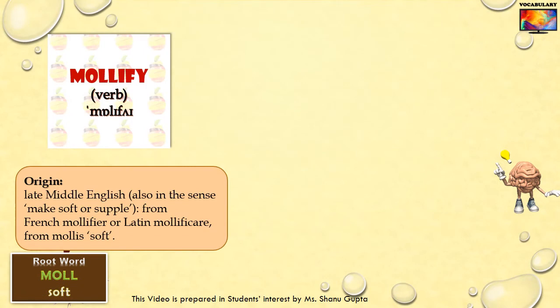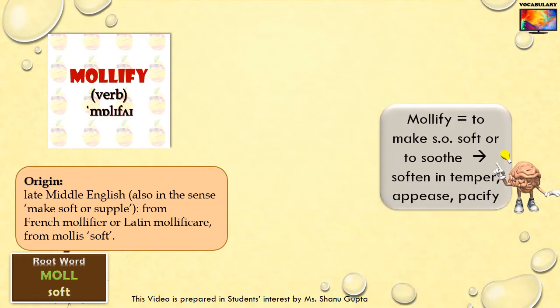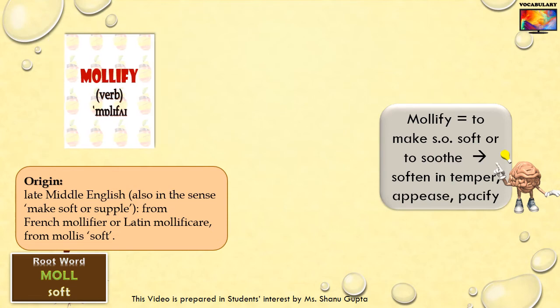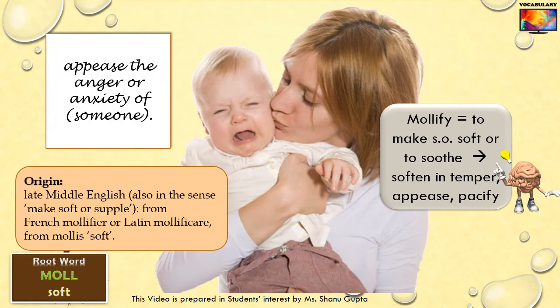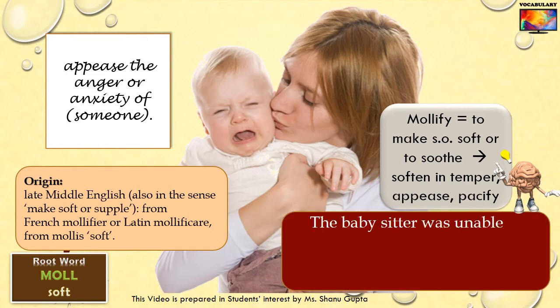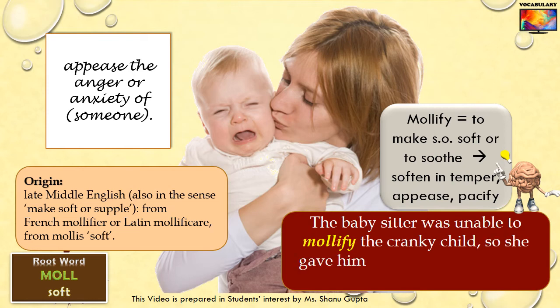This second meaning of emollient is quite similar to that of the word mollify. Made up of the root moll meaning soft and the suffix meaning to make, mollify literally means to make someone soft or to soothe someone. According to the Oxford dictionary, to mollify is to appease the anger or anxiety of someone. Example: The babysitter was unable to mollify the cranky child, so she gave him some sedative and put him to sleep in his bed.